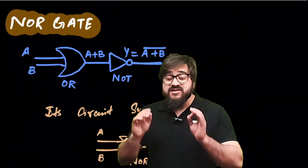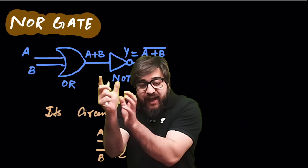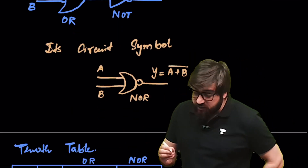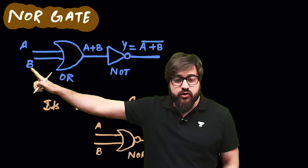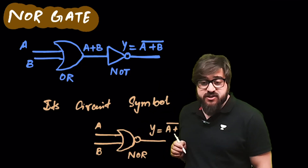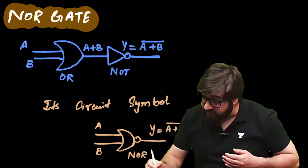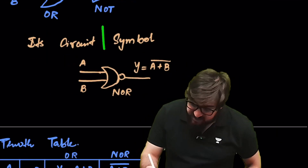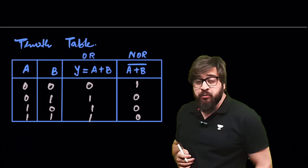The NOR gate is a combination of OR plus NOT. If you take an OR gate and follow it with a NOT gate, it becomes a NOR gate. Inputs A and B go into the OR gate giving A+B, and then the NOT gate applies the bar, giving output A+B (whole bar). The circuit symbol includes a bubble on the OR gate, and the boolean expression is Y = (A+B)̄.